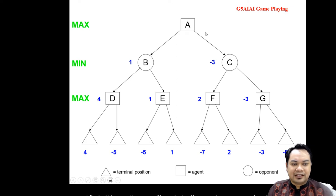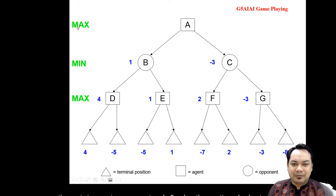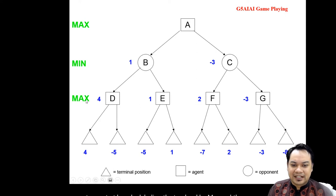When the question asks about maximizing the opponent movement, you start by labeling the top level as max. Then the next level is labeled min, then max, and if you have another level, you label it with another min. The levels alternate between max and min.